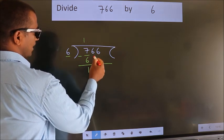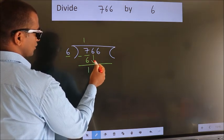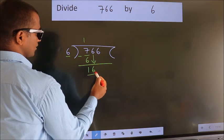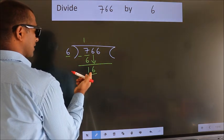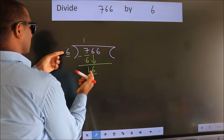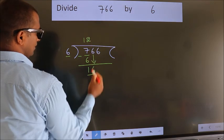After this, bring down the beside number. So 6 down. So 16. A number close to 16 in 6 table is 6 twos, 12.